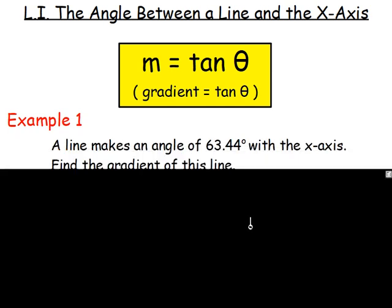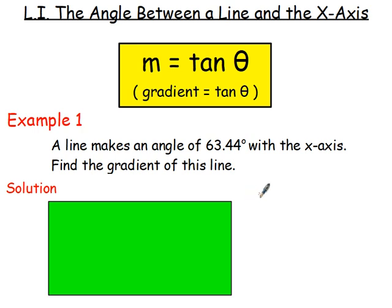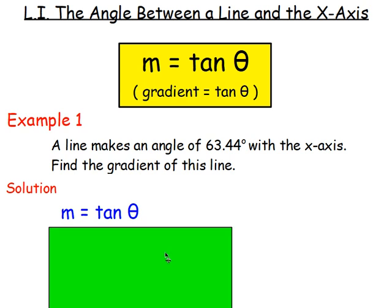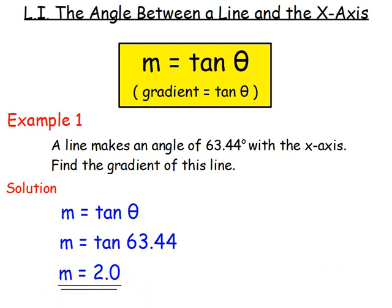A line makes an angle of 63.44 degrees with the x-axis. Find the gradient of this line. The angle theta is 63.44 degrees, and we want the gradient. So substitute into the formula: m equals TAN theta, so m equals TAN 63.44. Go to the calculator, press TAN, put in 63.44, press equals. The answer is 2.00. Round to one or two decimal places — that is your gradient.